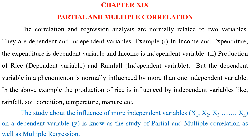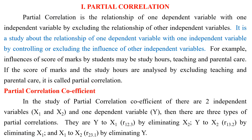In the above example, the production of rice is influenced by independent variables like rainfall, soil condition, temperature, manure, etc. The study about the influence of more independent variables x1, x2, x3, ..., xn on a dependent variable y is known as the study of partial and multiple correlation as well as multiple regression.